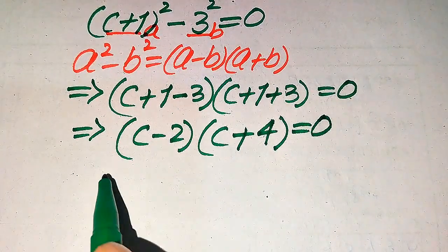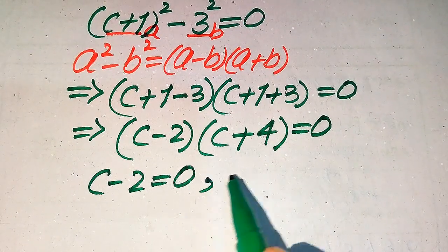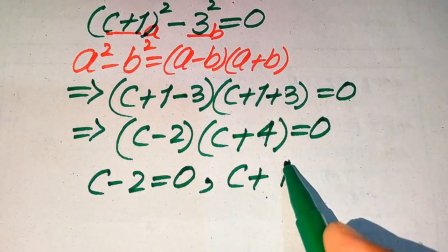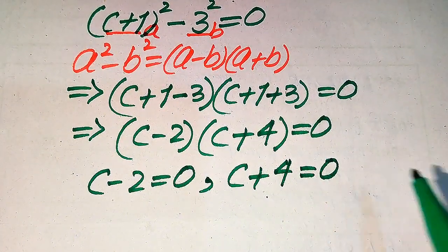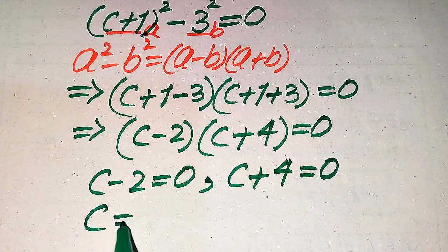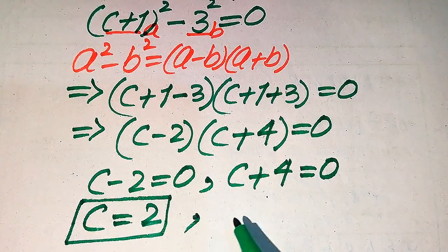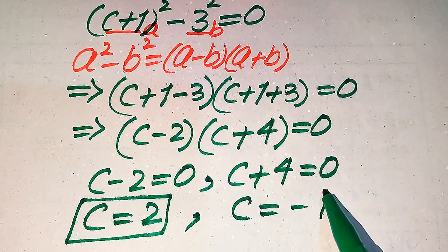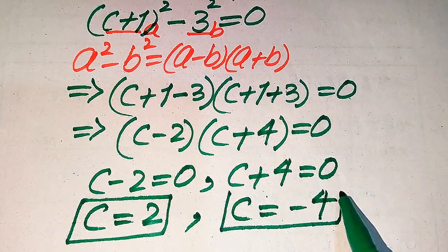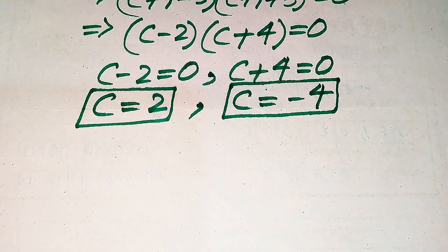We have (c − 2)(c + 4) = 0. We divide this equation into two cases: the first case is c − 2 = 0, and the second case is c + 4 = 0. From the first case we get c = 2, which is our first root. From the second case we get c = −4, which is our second root.